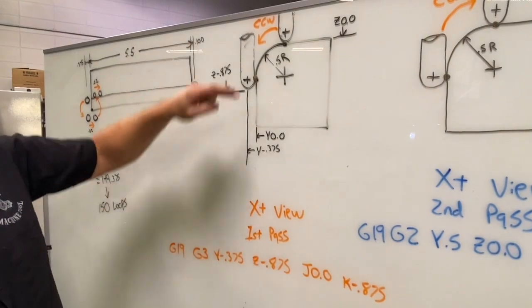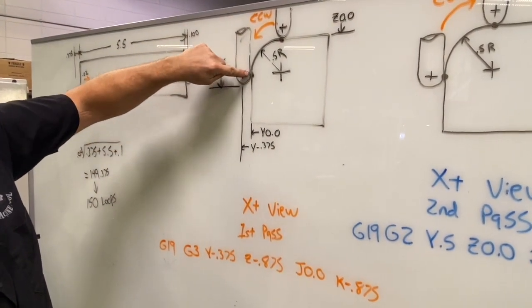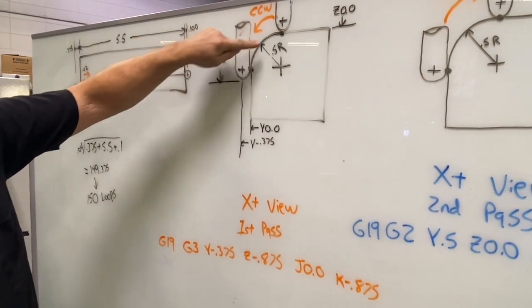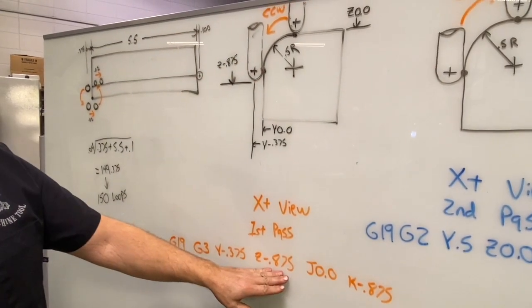And we're bringing the Z position down, the tip of our tool, so the tangent point of the ball is matched up to the tangent point of the part radius, which is half inch plus the radius of the ball to Z negative .875.